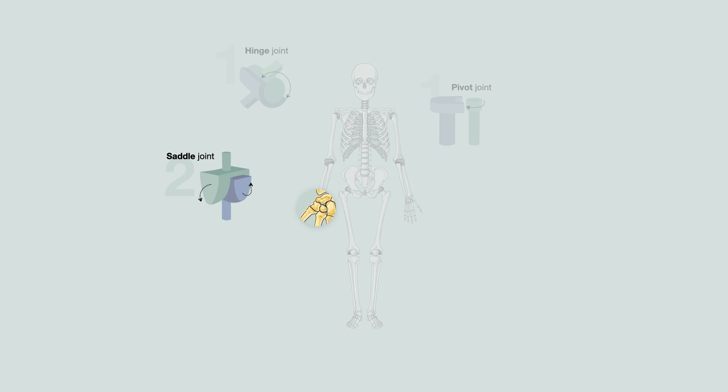A saddle joint occurs when two articulating bones are saddle-shaped, allowing for biaxial movement. The first carpometacarpal joint is an example, allowing for thumb extension and flexion and abduction and adduction, providing humans with a characteristic trait of an opposable thumb.